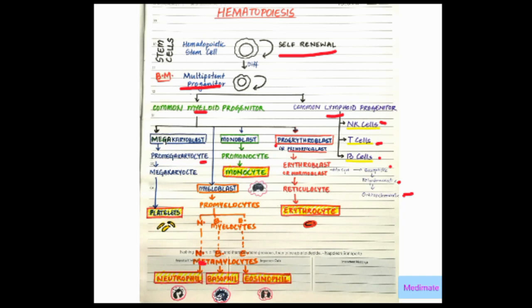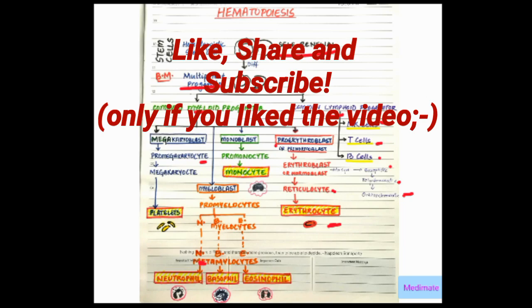Then the normoblast divides into reticulocyte, then the reticulocyte gives rise to erythrocyte. Thus, from the common myeloid progenitor, we get platelets, neutrophils, basophils, eosinophils, monocytes, and erythrocytes. That's it for today's video. Thanks for watching.